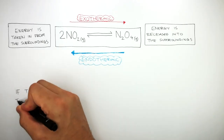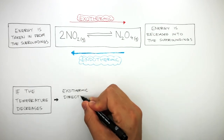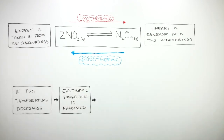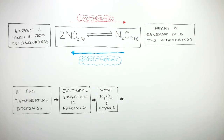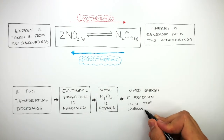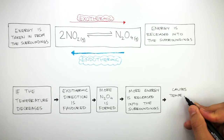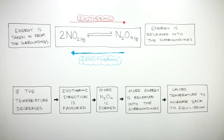Whereas if the temperature decreases, the exothermic direction is favoured. So more N2O4 is formed as more energy is released into the surroundings. This causes the temperature to increase back to the equilibrium as more energy is released into the surroundings as the exothermic direction is favoured.